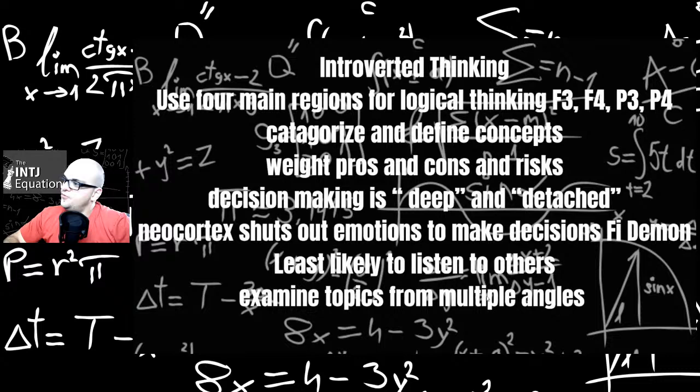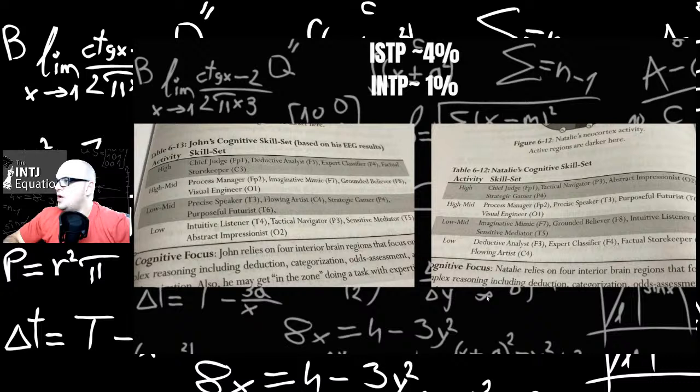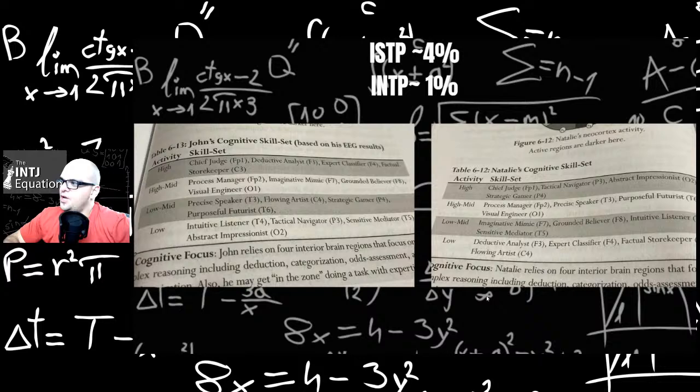Introverted thinking. Use four regions for logical thinking: F3, F4, P3, P4. Categories and defined concepts. Weigh pros and cons and risks. Thought that was more of a Te thing, but maybe not. Decision making is deep and detached. Neocortex shuts out the emotion to make decisions. Fi demon, basically. Least likely to listen to others. So ISTPs, INTPs, they kind of will just shut you out once their mind is made up. They can be insanely arrogant with their Ti. INTJs, INFJs often get accused of the god complex. But yeah, I think everybody has it in some way or some way or form. And ISTPs are estimated to be 4%. INTPs are 1%. I think INTPs are probably a little bit more common than that.